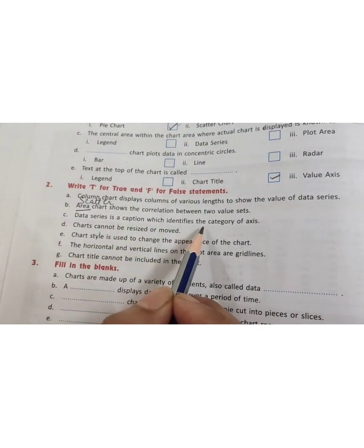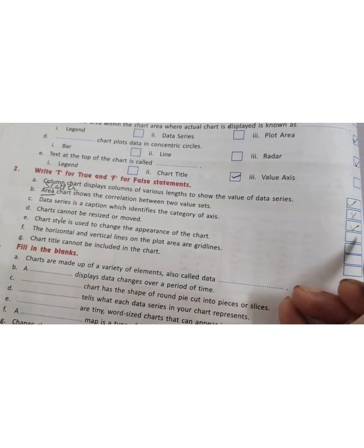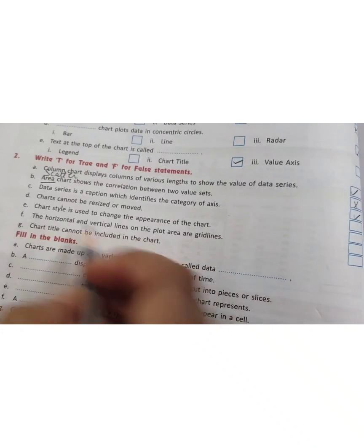Next, data series is a caption which identifies the category of axis. True. You can write T also or you can mark the sign of tick, but better to write T. It's completely up to you.